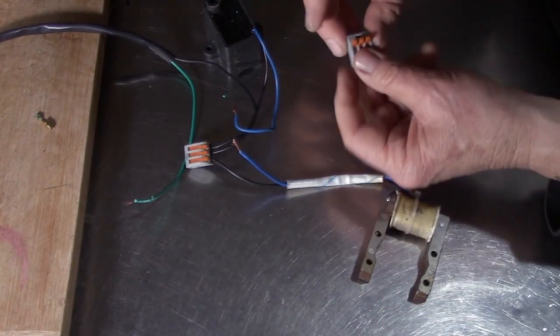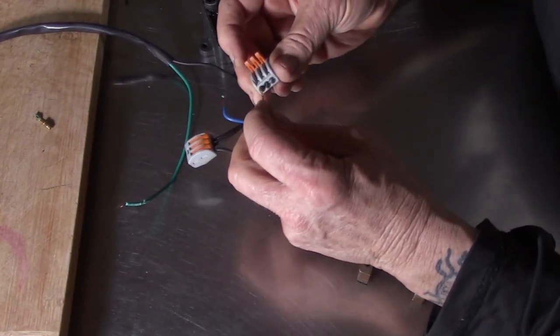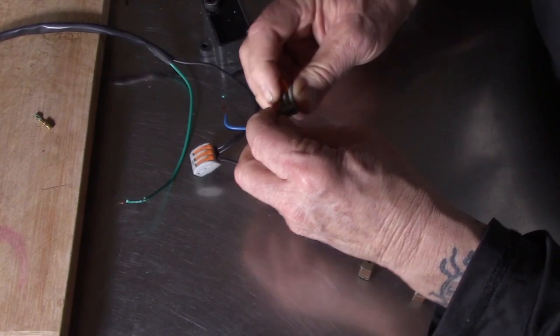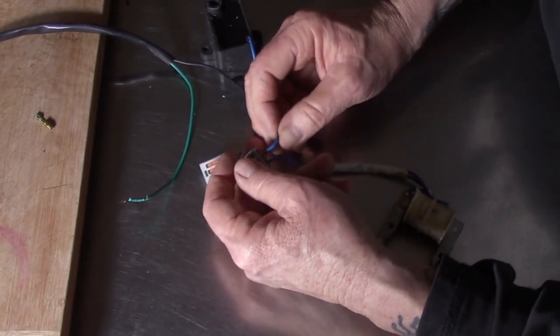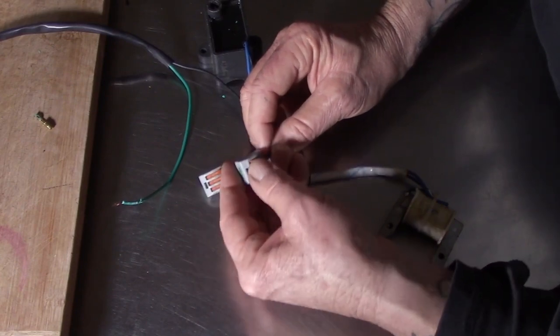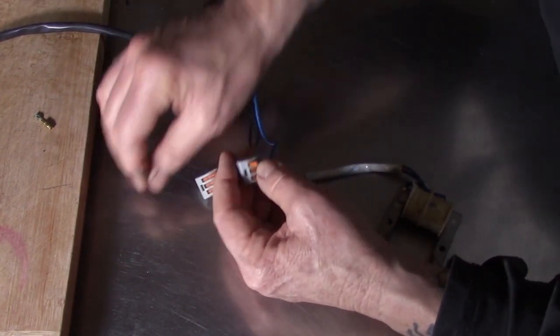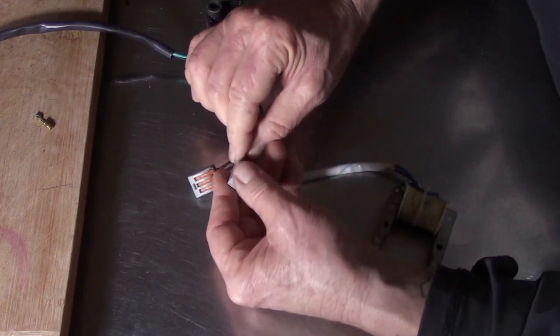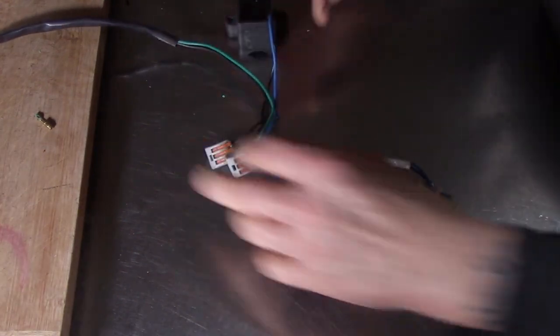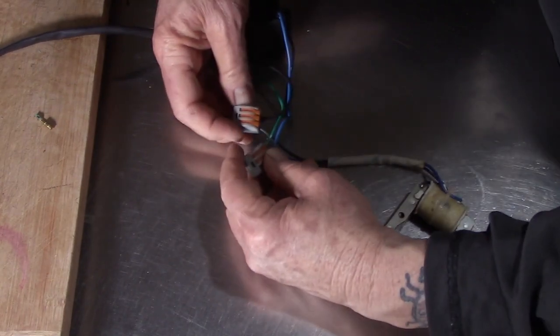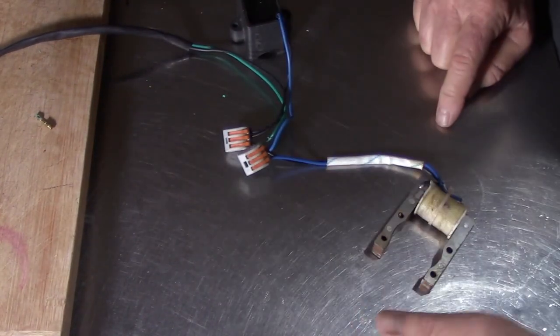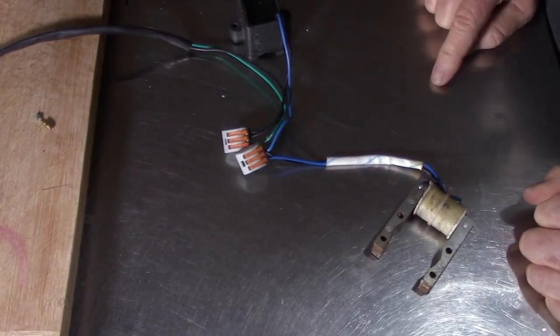So we're going to use our second connector here, push that in. That there, and our other wire from the kill switch goes in there, and we are wired up here. It doesn't matter if these bad boys get wet, whatever, you're good to go. They are reusable.